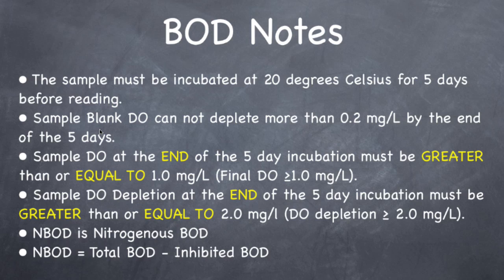A sample blank is strictly DI water. They want to make sure that your DI water doesn't deplete more than 0.2 mg per liter. Because if it does deplete by more than that, your whole entire test is invalid — because your DI water, your dilution water, is not good dilution water. It actually has something in there that's consuming BOD, so that would alter your final results. So sample blank DO at the end of the 5 days cannot deplete by more than 0.2 mg per liter. That's a rule.